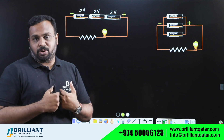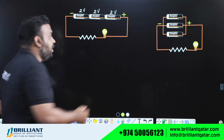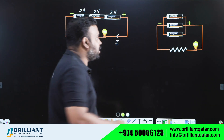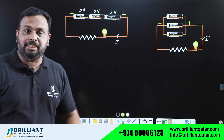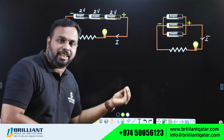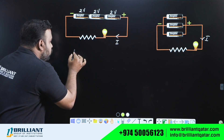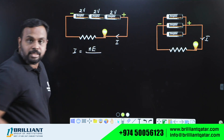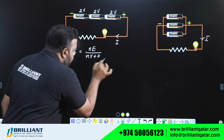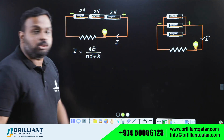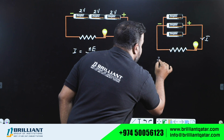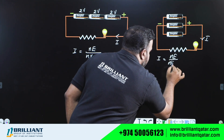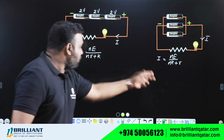Let us take the current flowing through the bulb as I in both cases. In the series combination, the equation for the total current is: I = nE / (nr + R). In the parallel combination, the equation for the current is: I = nE / (nR + r). Now compare these two formulas.